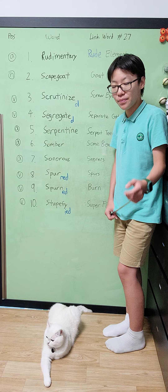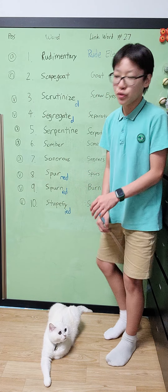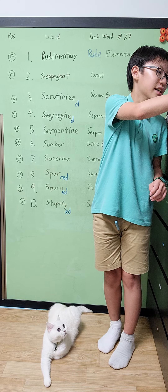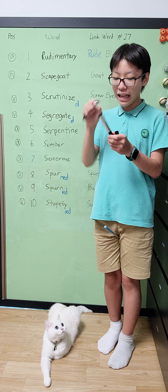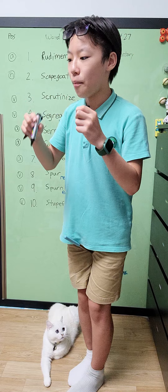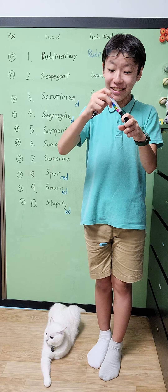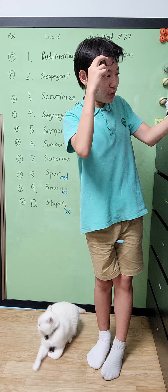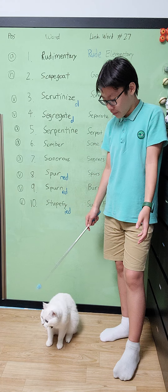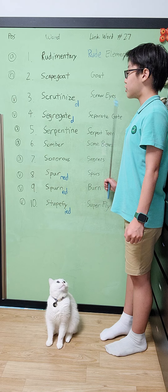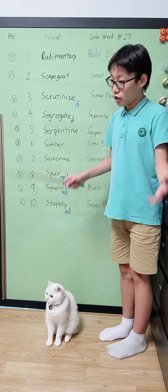Number 3, you have scrutinize. It's a verb that basically means to look closely or to inspect closely. It doesn't really mean you need screw eyes — actual screws — but it means to look closely at something. You remember scrutinize with 'screw eyes': if you want to scrutinize something, you need screw eyes.